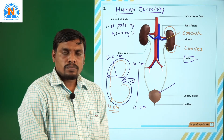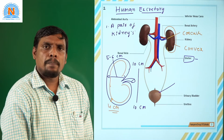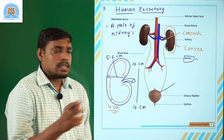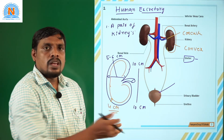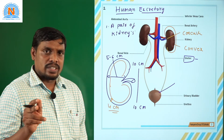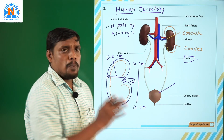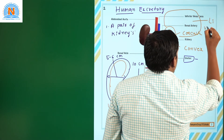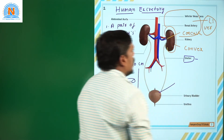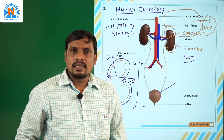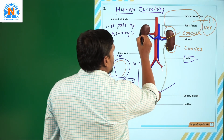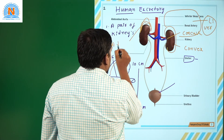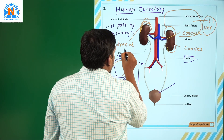One more interesting point: the right kidney is placed slightly lower than the left kidney. The reason is that the liver, a large gland, is present on the surface of the right kidney, which causes it to be positioned lower. Upon each kidney, a special endocrine gland that looks like a cap is present, called the adrenal gland.